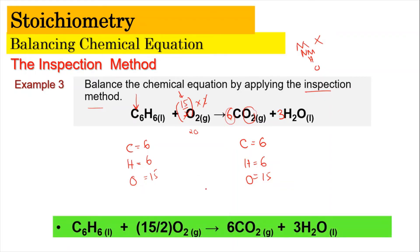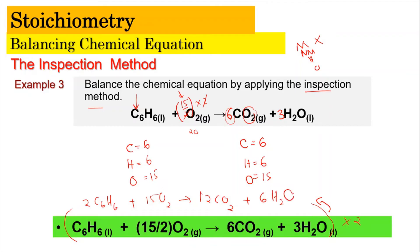So the balanced equation is C6H6 + 15/2 O2(g) → 6CO2 + 3H2O. Sometimes, to remove the fraction, we multiply the entire equation by 2: 2C6H6 + 15O2 → 12CO2 + 6H2O. Remember to write the phases as well. So the equation can be written either way — with or without the fraction — since we multiply by 2 to eliminate fractions.